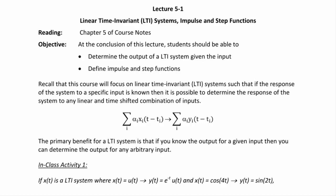Recall that this course will focus on LTI systems such that if the response of the system to a specific input is known, then it is possible to determine the response of the system to any linear and time-shifted combination of inputs. In other words, the sum of alpha_i x_i(t - t_i) produces the sum of alpha_i y(t - t_i). The primary benefit of an LTI system is that if you know the output for a given input, you can determine the output for any arbitrary input.